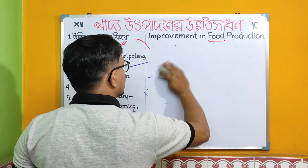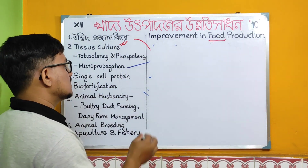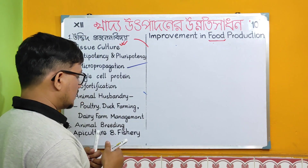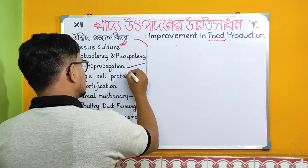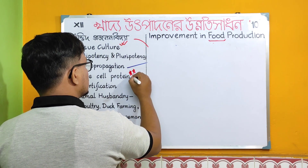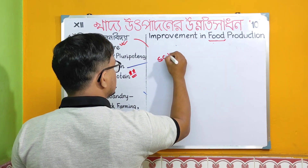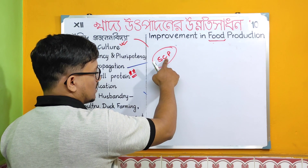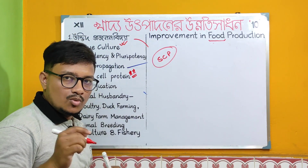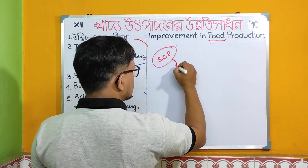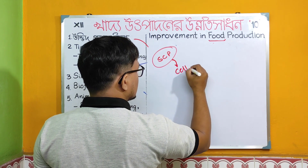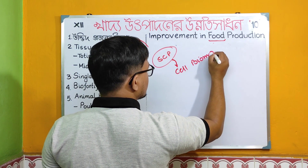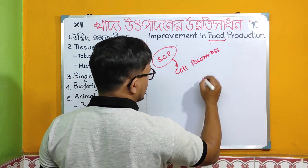The next important topic is Single Cell Protein — SCP. SCP stands for Single Cell Protein. It is defined as cell biomass — the protein from cell biomass is used as food. This is a very important topic marked with double stars.